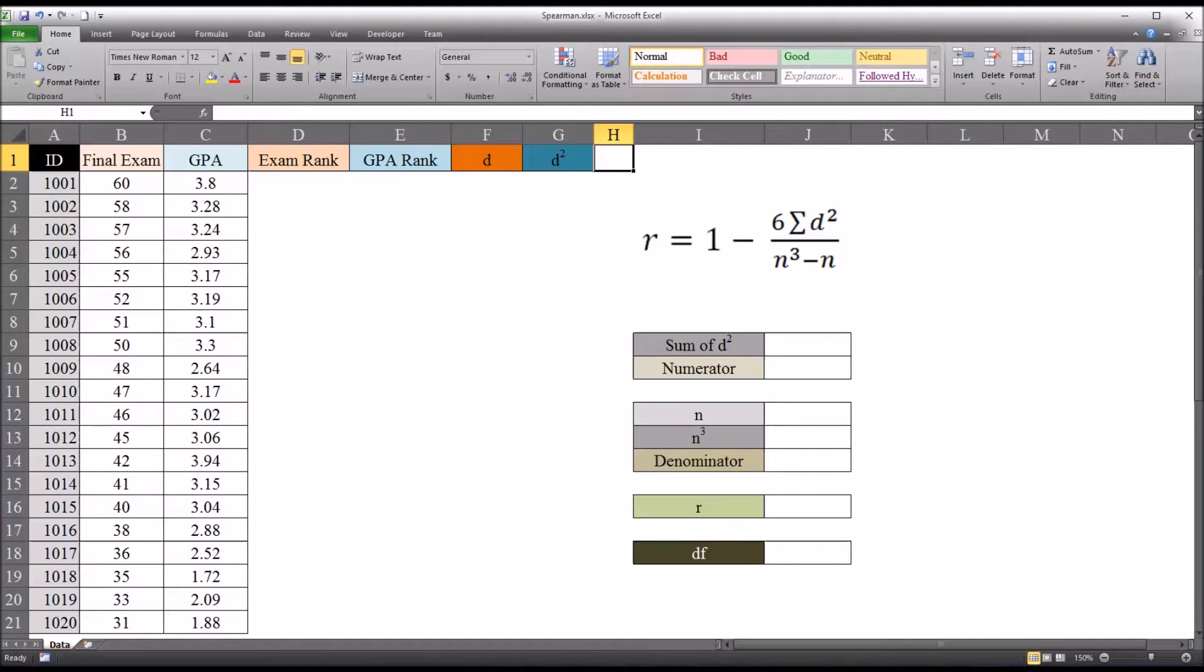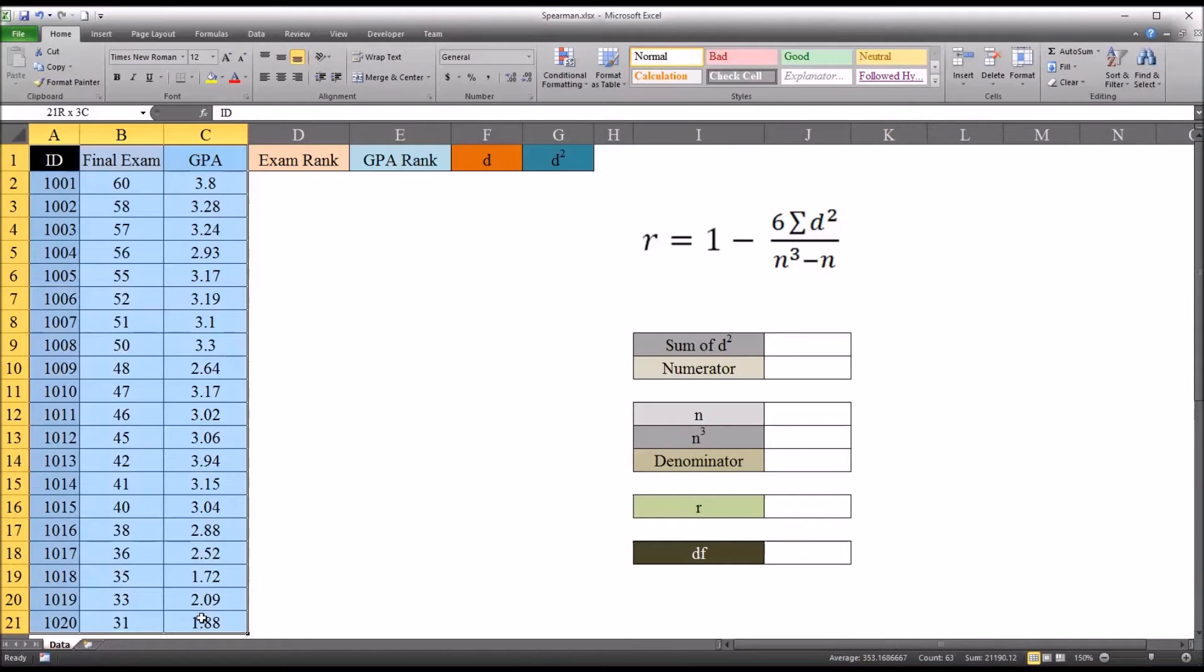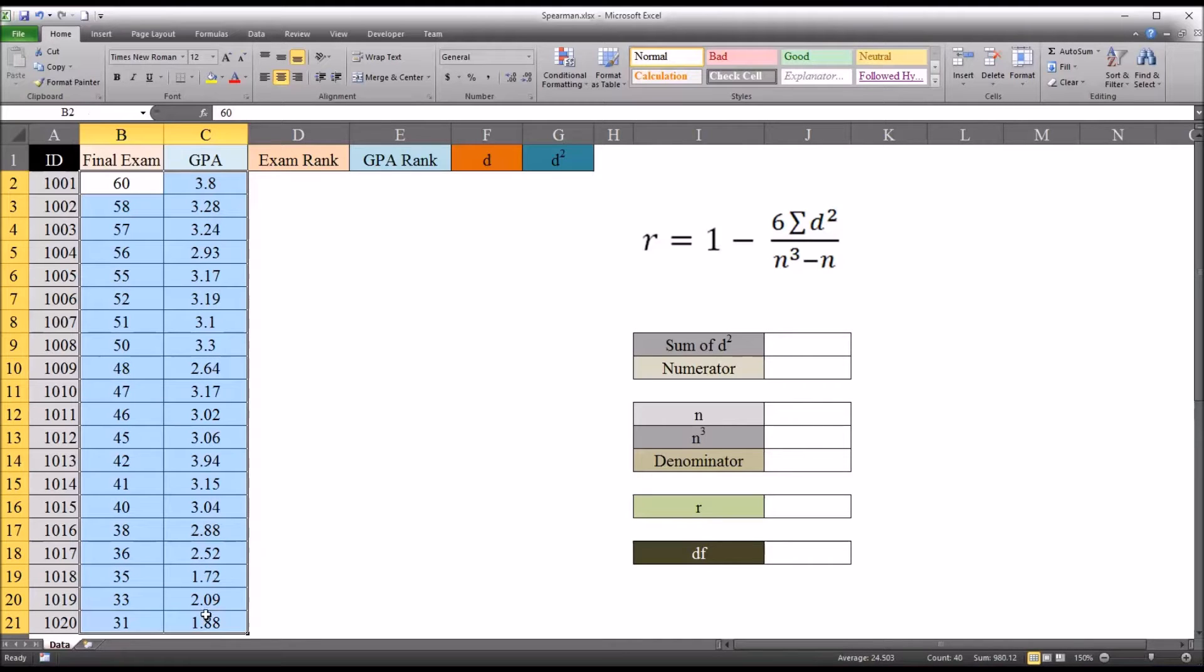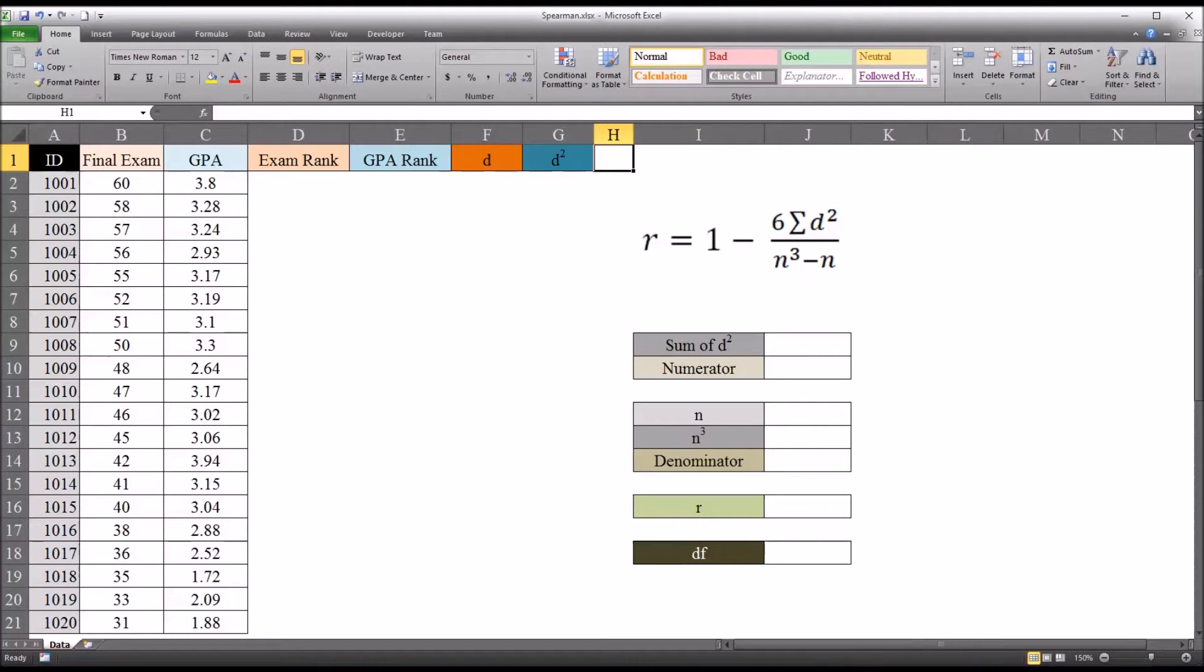Spearman's rank correlation coefficient is a non-parametric alternative to the Pearson product moment correlation coefficient. Oftentimes in counseling research, we want to evaluate the association between two variables, such as the variables I have here. I have some fictitious data: ID, final exam, and GPA. So of interest would be the relationship between the final exam and the GPA. The most common route to go here would be to use Pearson's R, but Pearson's R has assumptions that are sometimes violated by our data. And the assumptions for Spearman's rank correlation coefficient are different. They are a bit more flexible.